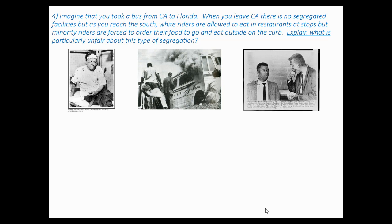Imagine taking a bus from California to Florida. The interstate highway system had just been created by Dwight Eisenhower — Interstate 10, the Santa Monica Freeway, goes all the way from Santa Monica to Phoenix, Tucson, El Paso, Houston, New Orleans, and Jacksonville, Florida. Buses were a quick, cheap way to travel since airplane travel was very expensive. On a multi-day trip there are stops for people to use the bathroom, get food, and whatever they need. When you leave California there are no segregated facilities, but as you reach the south, white riders are allowed inside air-conditioned restaurants while minority riders are forced to order food outdoors through the back door and eat on the curb.